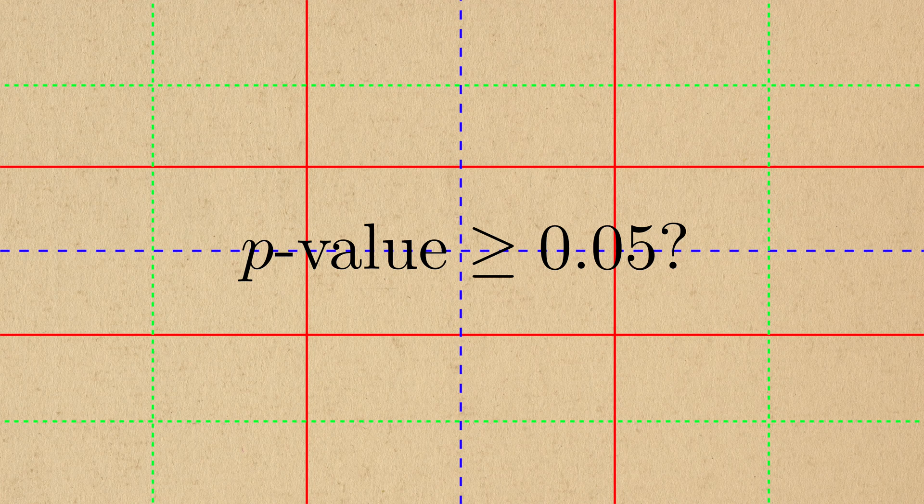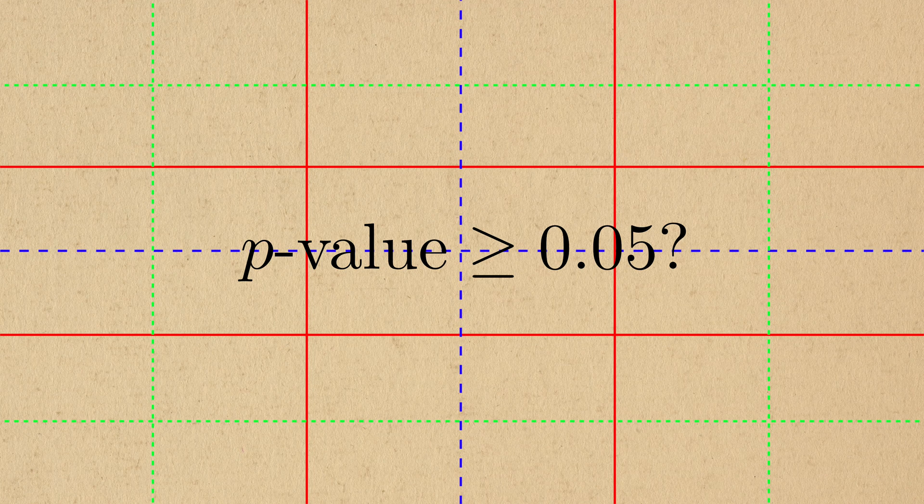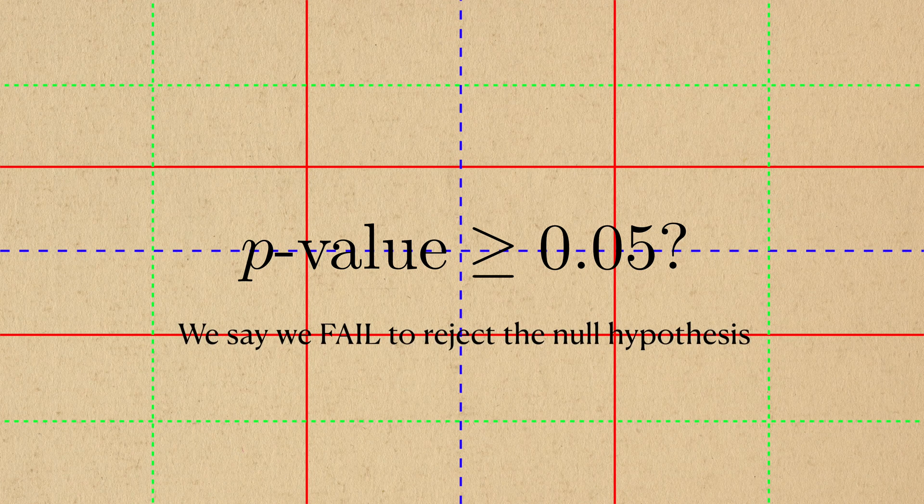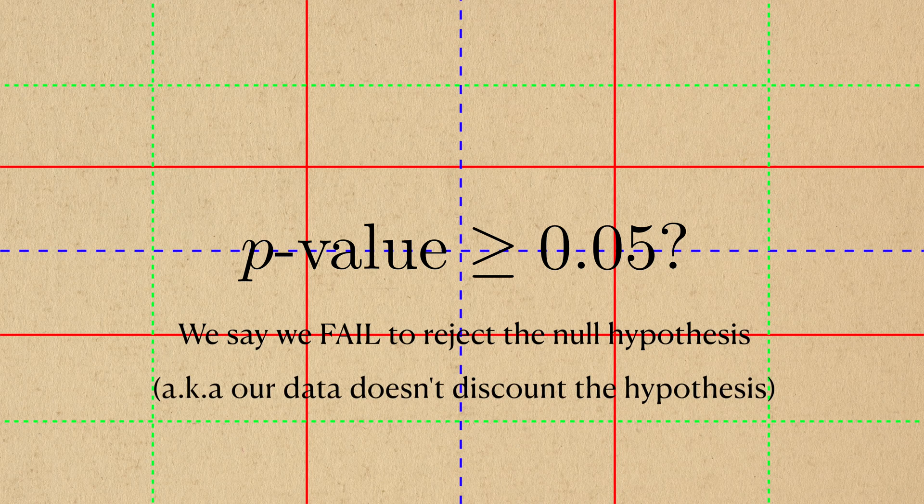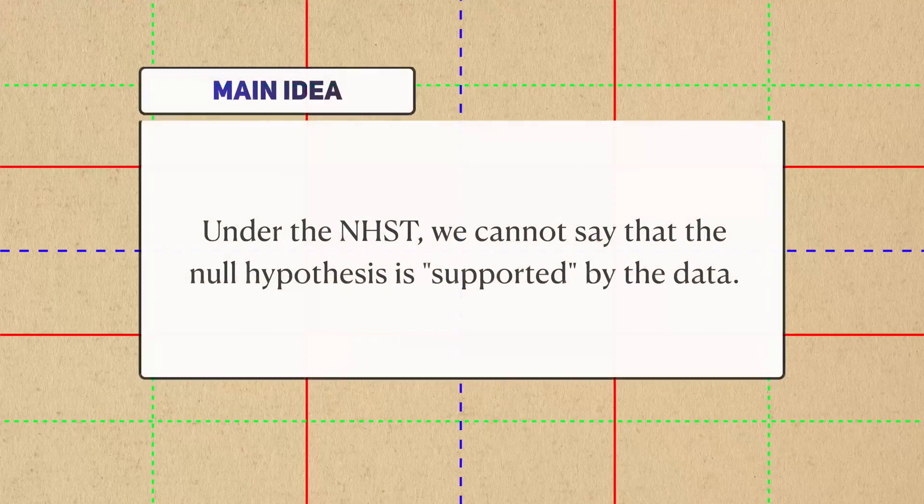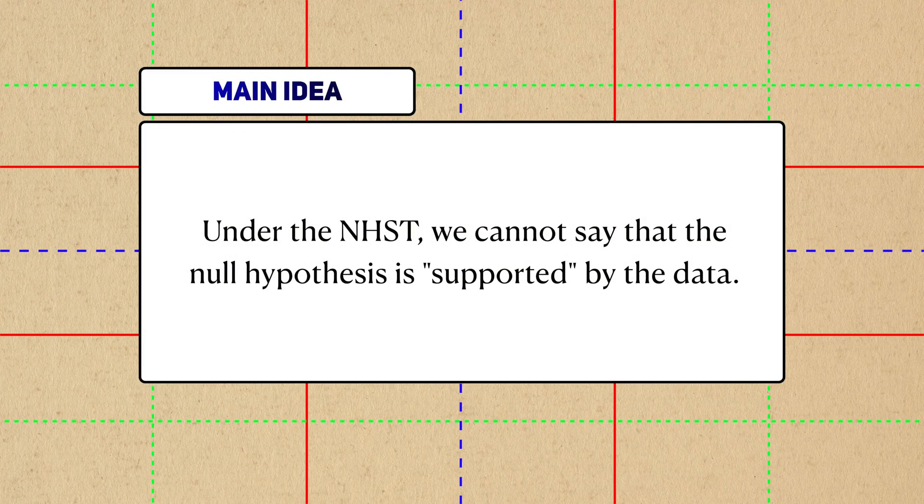But what would have happened if the p-value was greater than 5%? We would say that we fail to reject the null hypothesis, meaning that the data we collected did not provide enough evidence to overturn it. Under the NHST, we don't support hypotheses. We can only reject them.